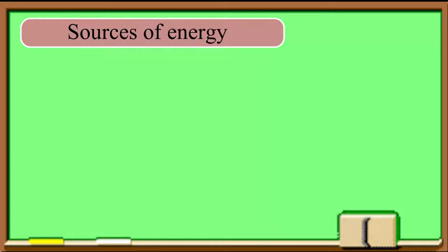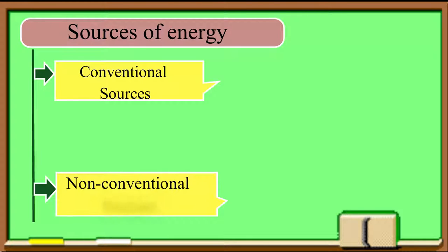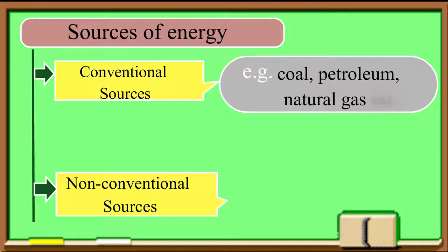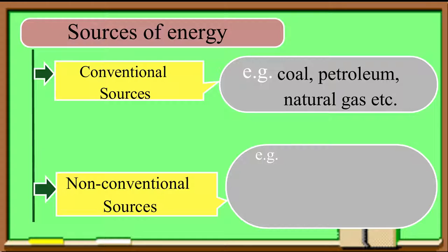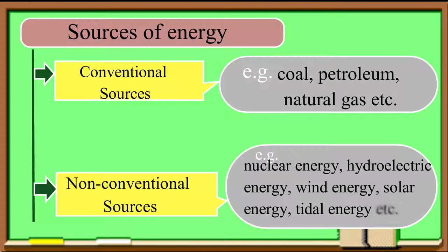Sources of energy are classified into two: conventional sources and non-conventional sources. The examples of conventional sources are coal, petroleum, natural gas, etc. The examples of non-conventional sources are nuclear energy, hydroelectric energy, wind energy, solar energy, tidal energy, etc.